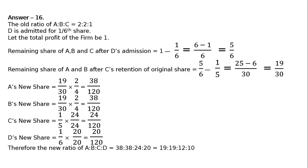The new ratio of A:B:C:D is equal to 38:38:24:20. Dividing all by 2, we get 19:19:12:10. This is the final new profit sharing ratio.